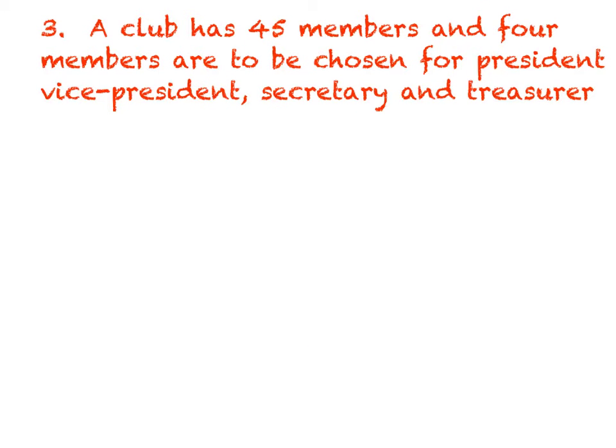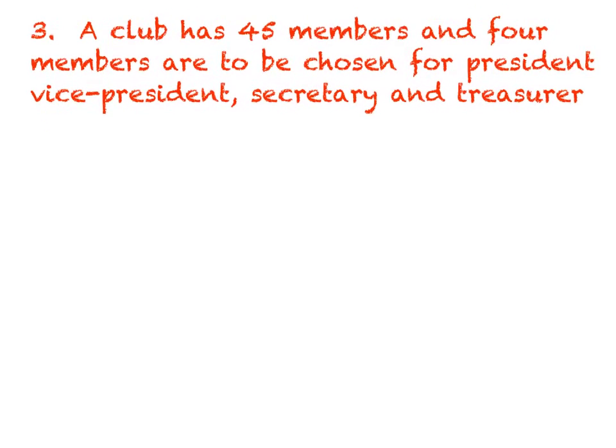Example three, a club has 45 members and four members are to be chosen for president, vice president, secretary and treasurer. Are we thinking permutation or combination? Well, it's very similar to the previous problem. You had 45 people in your club and you're picking four of them. However, this time, I would say I'm being very specific. I need specific jobs. I need not just four people to go on to a committee. I need a president, a vice president, a secretary and treasurer. And think about this. Does the president of the United States and the vice president and the secretary and treasurer, do they have very different roles or is it one big group together? Well, I would say they're very different, very specific jobs. So because that order is important, we're going to call this a permutation.